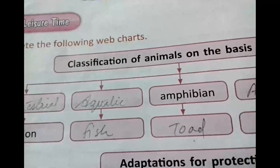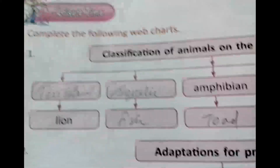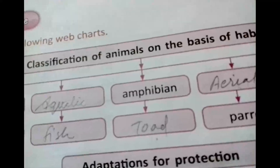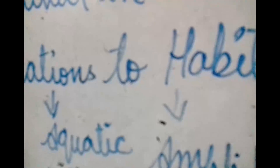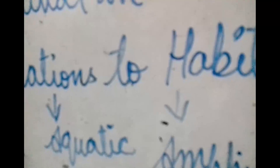You can take other examples as well — there are many different types of animals which can be included as examples. I hope you have understood about adaptations for survival in animals. Students, read this chapter, try to understand, and find out the hard words. In our next video we will discuss the next topic. Thank you and have a nice day.